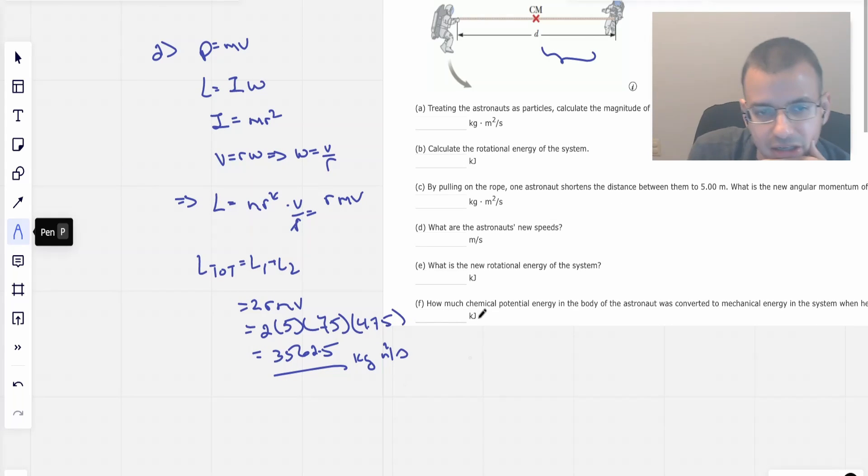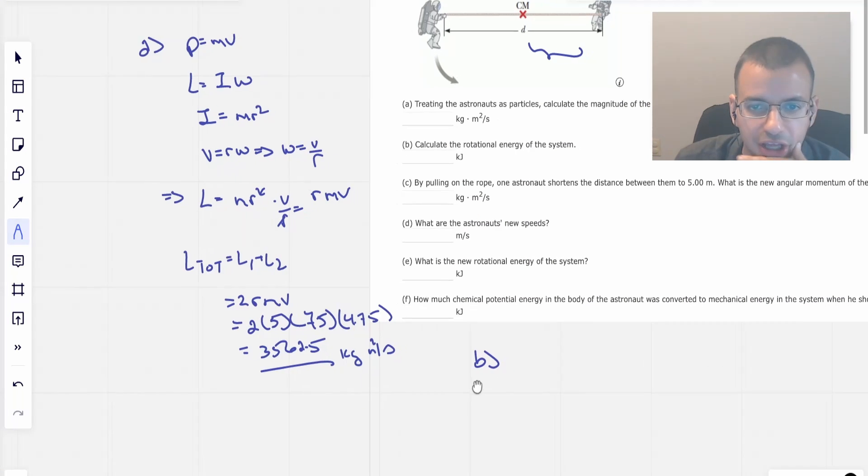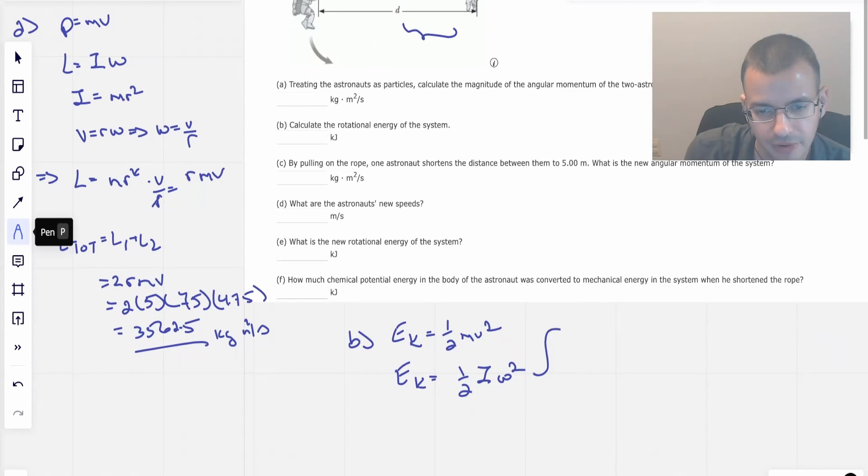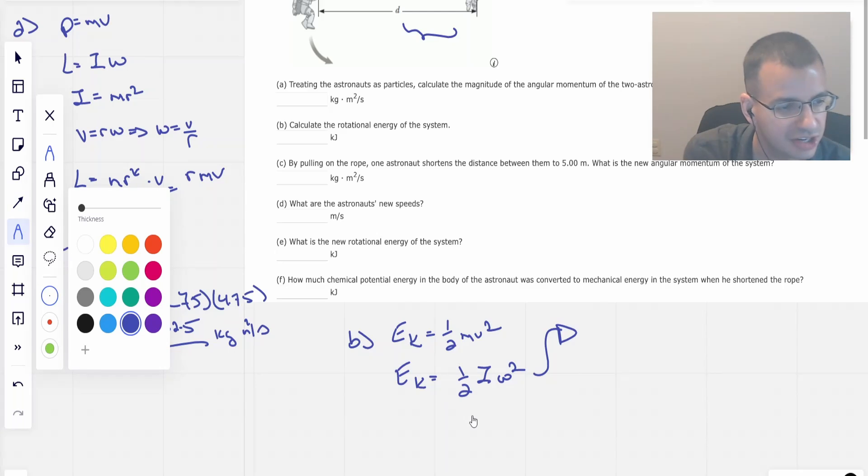Now for part B, we want to calculate the rotational energy of this system. So I'm going to think of this more as just calculating the kinetic energy. I'm going to say it is 1 half mv squared, and the rotational equivalent of that is 1 half I omega squared. I think of pretty much everything in terms of linear, and then just do the rotational analogy.